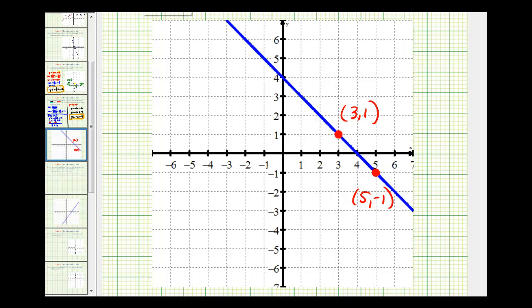And, we found the equation of this line to be y equals negative x plus four. Which, remember, is the same thing as y equals negative one x plus four. So, by looking at this line, let's quickly verify that the slope is equal to negative one or negative one over one, and the y-intercept is positive four.